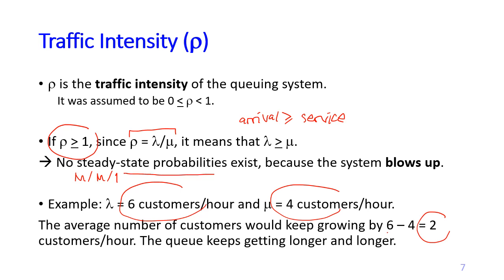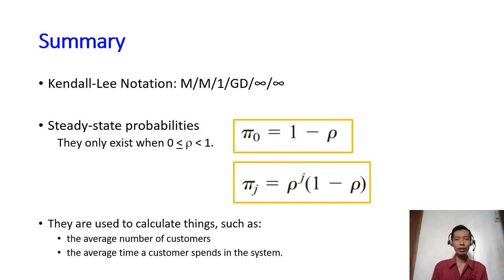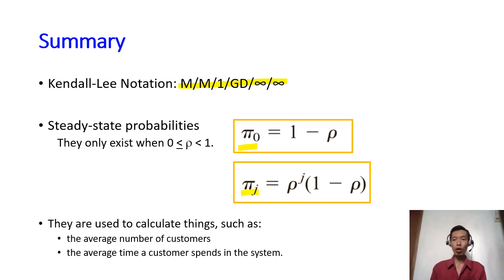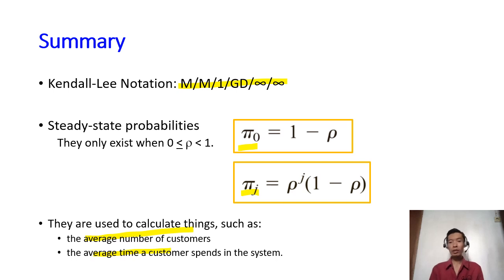Here is the summary of what we've learned: this is the Kendall notation for the M/M/1 system, and these are the formulas to calculate the steady state probabilities π_0 and π_j, where ρ is defined as lambda over mu. We will use these steady state probabilities to calculate other interesting quantities, such as the average number of customers present in the system and the average time a customer typically spends in the system. We're going to do this in the next video — see you then, thank you.